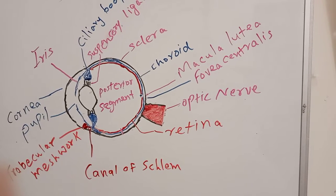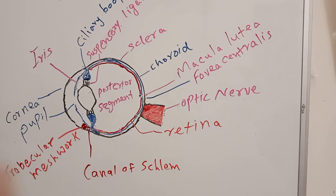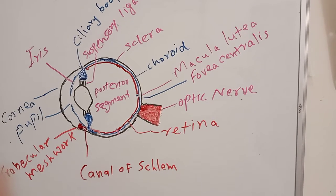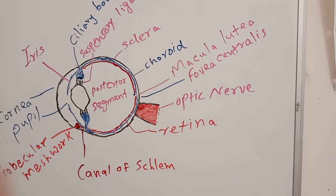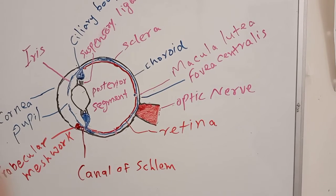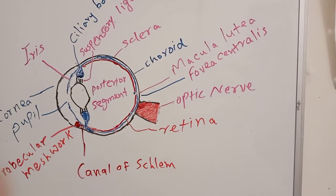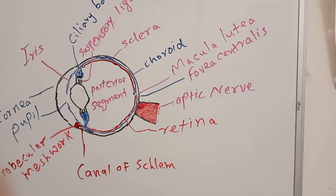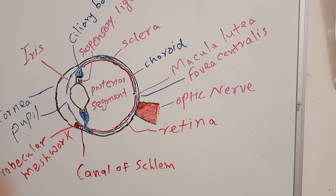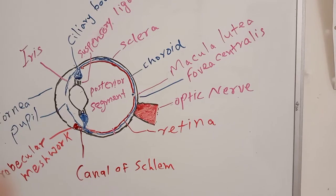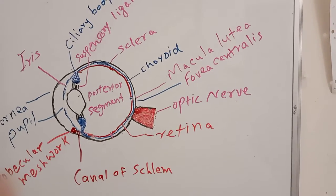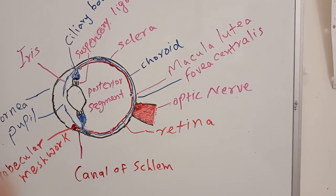The wall of the eyeball consists of three layers. Outer one is sclera, which is white of the eye. Middle one is choroid, which is vascular layer of the eye. It has a lot of blood vessels so it supplies blood to all parts of the eye.